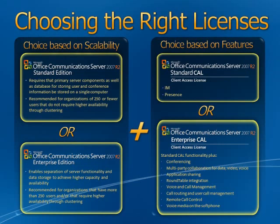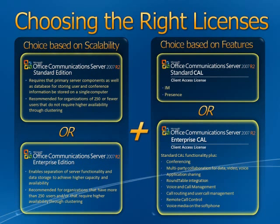With Office Communications Server, there is that choice to be made initially between the Standard and Enterprise Editions of the server, and then the Standard and Enterprise CALs. The Standard Edition is aimed at smaller companies — really about scalability — potentially running on a single server with 250 or fewer users. Whereas the Enterprise Edition is aimed at companies running OCS across a few servers and maybe having more than 250 users. When it comes to CALs, the Standard CAL covers instant messaging functionality and presence integration, as well as web access and mobile access for Office Communicator. The Enterprise CAL of Office Communications Server covers the whole web conferencing area and voice integration.